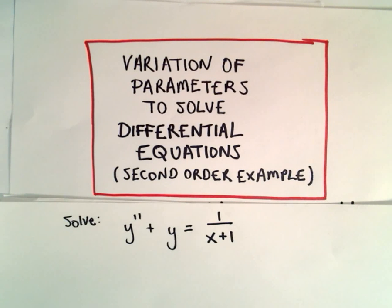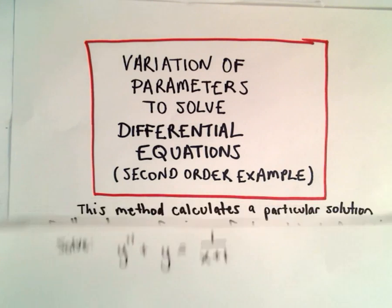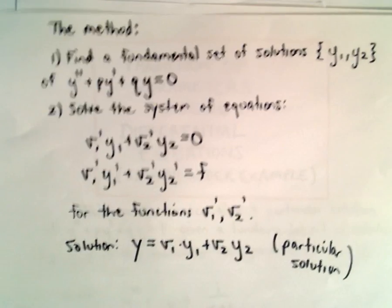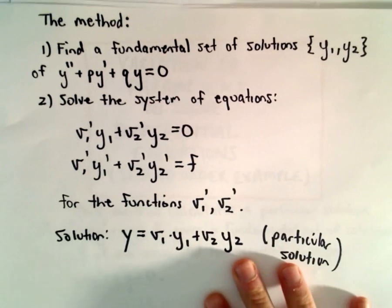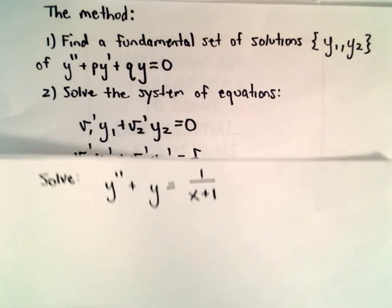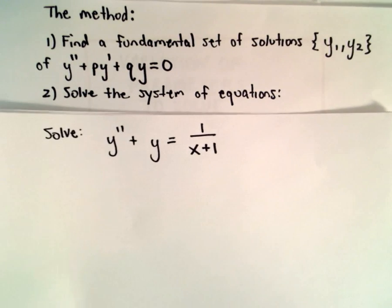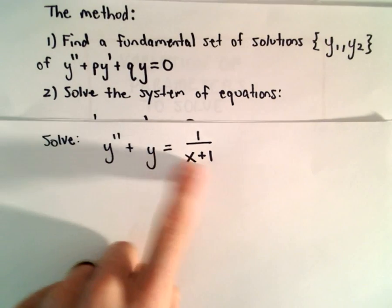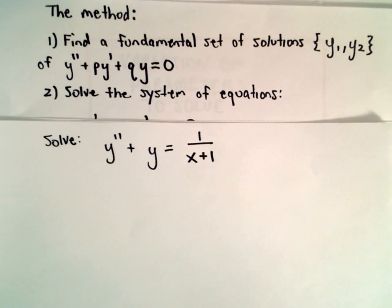Here I'm going to do another example of using variation of parameters to solve a second-order differential equation. Again, there was the basic procedure that we use, and I'll refer back to that. So here we're going to solve the differential equation y double prime plus y equals 1 over x plus 1.